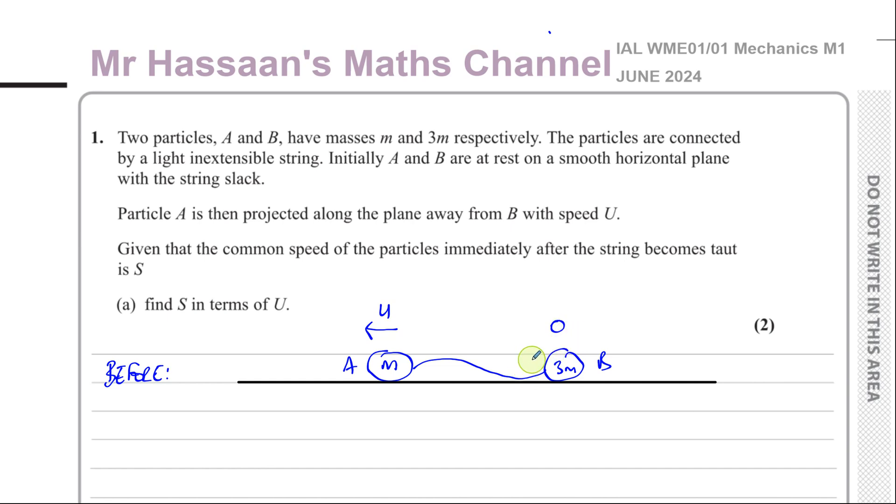And then it says, given that the common speed of the particles immediately after the string becomes taut. So when the string becomes taut, you can think of them together as one, like one block moving. When the string becomes taut, this is A and B together. A and B moving together. And their common mass is 4M. And obviously, they'll move in that direction. If once the string becomes taut, the speed will be S in this direction. So we're going to find what S is in terms of U. All right, so this is after, once A has reached a certain point where the string becomes taut, then this is what's going to be the situation after.